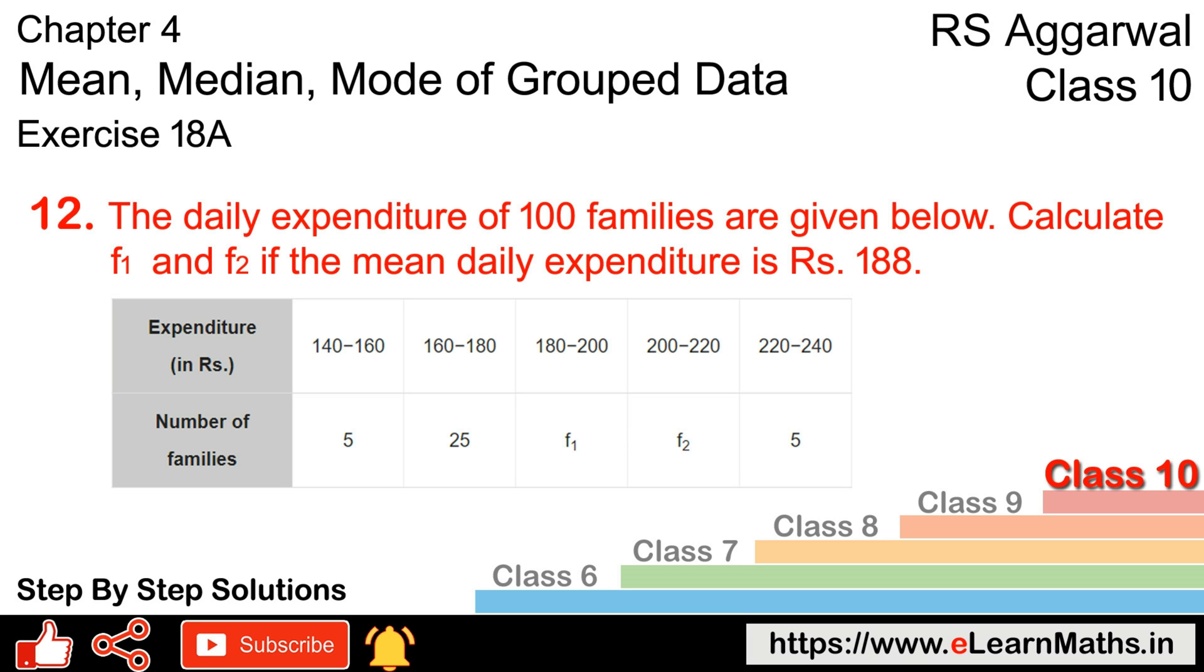Let's do question number 12 of exercise 18a on mean, median, and mode of grouped data. The daily expenditure of 100 families is given below.